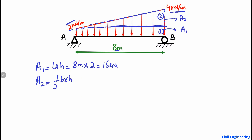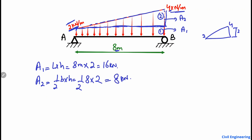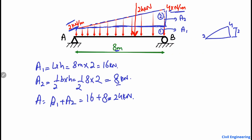Area A2 is the triangular load: half × base × height. The base is 8 meters. The height of the triangle is 2 kN/m, because the load goes from 2 to 4, giving a difference of 2. So A2 = 0.5 × 8 × 2 = 8 kN. The total load on the beam is A1 + A2 = 16 + 8 = 24 kN.